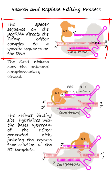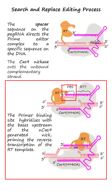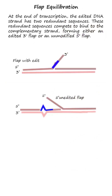The spacer sequence on the pegRNA directs the prime editor complex to a specific target site in the DNA. The Cas9 nickase cuts the unbound complementary strand. The primer binding site hybridizes with the bases upstream of the nickase-generated nick, priming the reverse transcription of the RT template. At the end of transcription, the edited DNA strand has two redundant sequences.